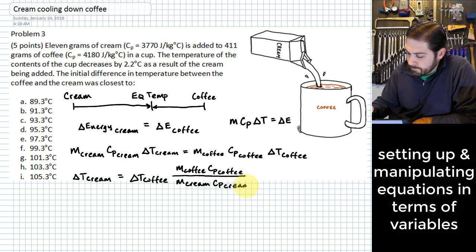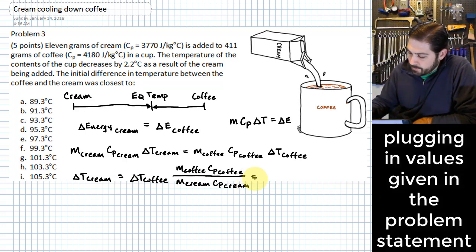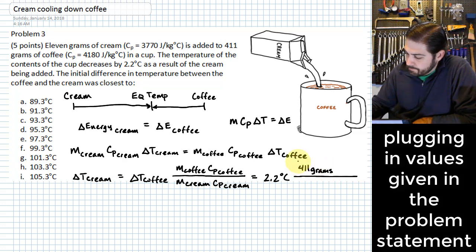Now this gives us a very convenient equation into which we can plug some numbers. We know what the change in temperature is of the coffee—it is 2.2 degrees C. We also know these various masses, so we know the mass of the coffee is 411 grams. And we know that the specific heat of the coffee is 4180 joules per kilogram degree C.